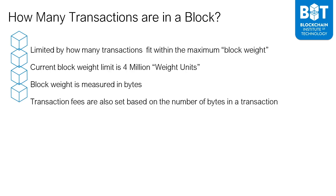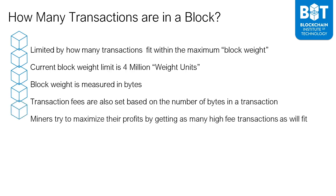Sometimes people think that, just like in money, the more money you send, you have to pay a higher fee. That's not the case in Bitcoin. The miners who are actually creating the blockchain try to maximize their profits by getting as many high-fee transactions as they can, which will fit within a block. The current block weight limit is 4 million weight units, so miners prioritize the transactions that have higher transaction fees associated, so they can make the biggest profits from creating that block.